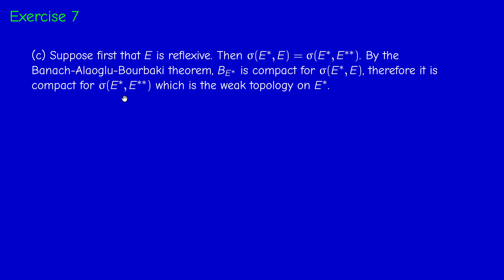By the Banach-Alaoglu-Bourbaki theorem applied to E*, the closed unit ball of E* is compact for the weak-star topology. Therefore it's compact for the weak topology — since they coincide — and therefore by Kakutani's theorem, E* is reflexive.